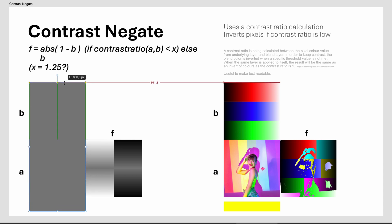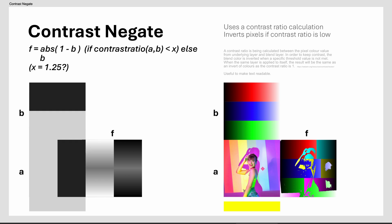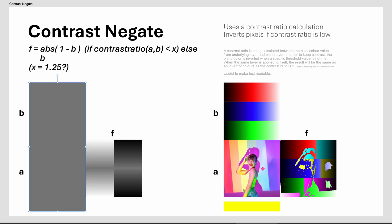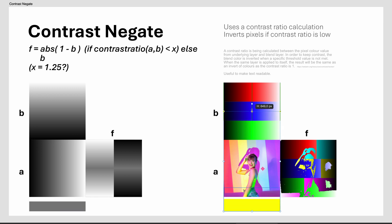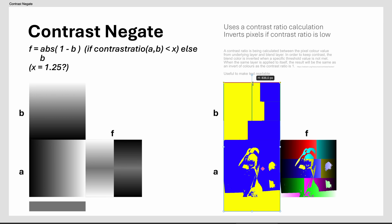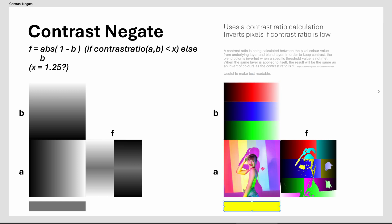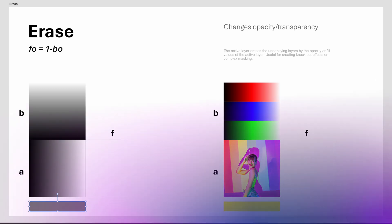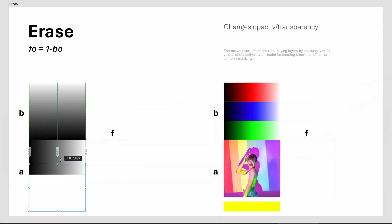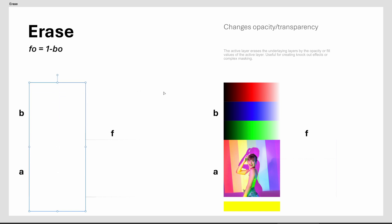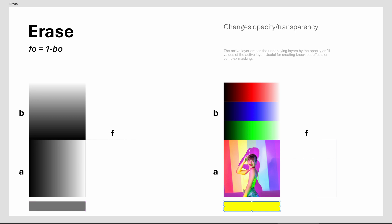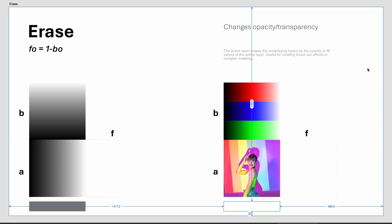The Contrast Negate Blend Mode: it looks like Affinity is doing a contrast calculation between the colors of the two layers — if a contrast threshold is not met, the blend pixel color is inverted. This is why when you apply a layer to itself in Contrast Negate blend mode, it will have the same effect as if it were inverted. This blend mode is quite useful for making sure icons or tags remain readable above an image with changing colors. The Erase Blend Mode is a special blend mode that modifies opacity values — the opacity or fill of the active layer determines how much of the underlying layers will be transparent. Can be used for masking effects.